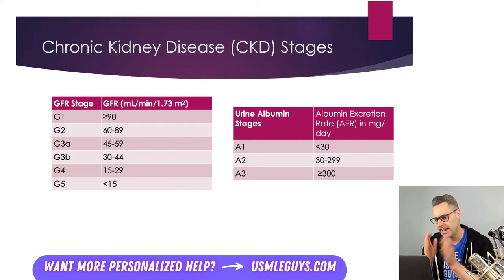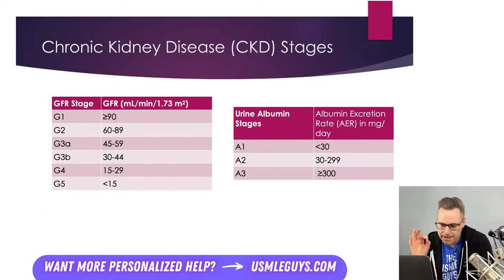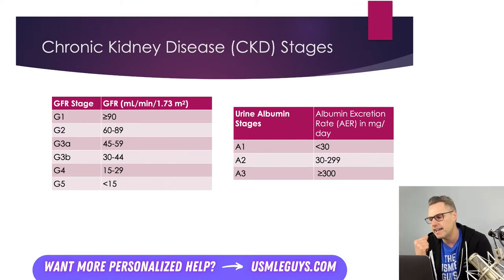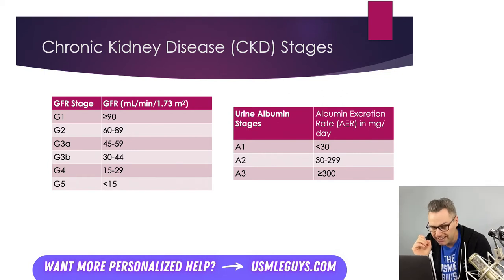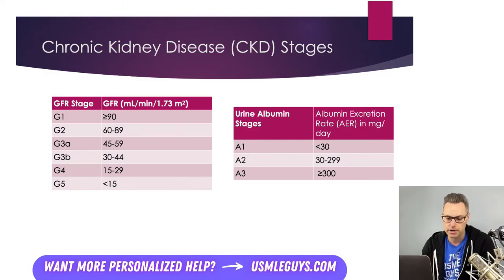After you have the A stages and the G stages, you can plug your patient's values into a grid. Based on the patient's A and G stages and where they line up on the grid, we can identify them as being either moderate risk, high risk, or very high risk, and this also determines the frequency of lab monitoring they'll need each year. A G5 and A3 is expected to have the worst outcomes and will require the highest level of monitoring.